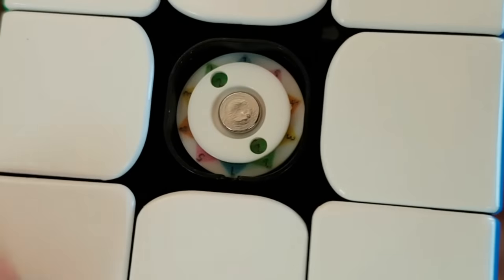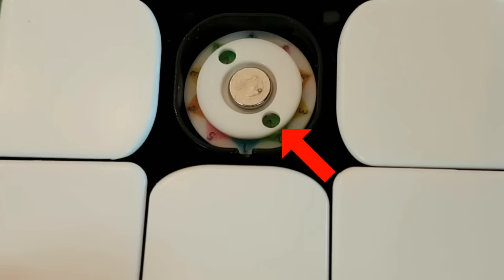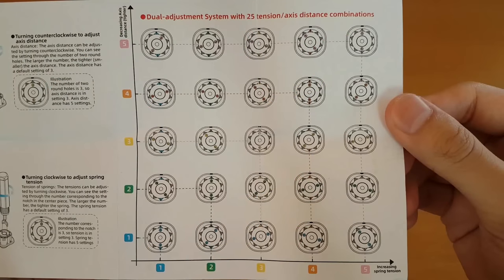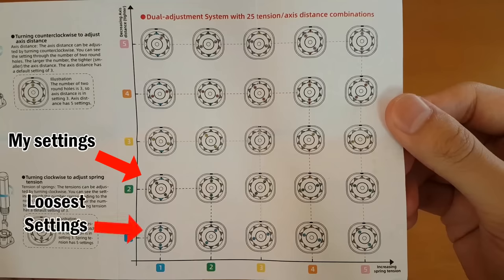If you're wondering which settings I use in the core, I have two on the inside, one on the outside, and for the magnets, I'm using setting two. And if you were paying attention to how the settings work, you'll know that these are relatively loose settings, almost the loosest settings. And if you know me, you know I don't usually do that.